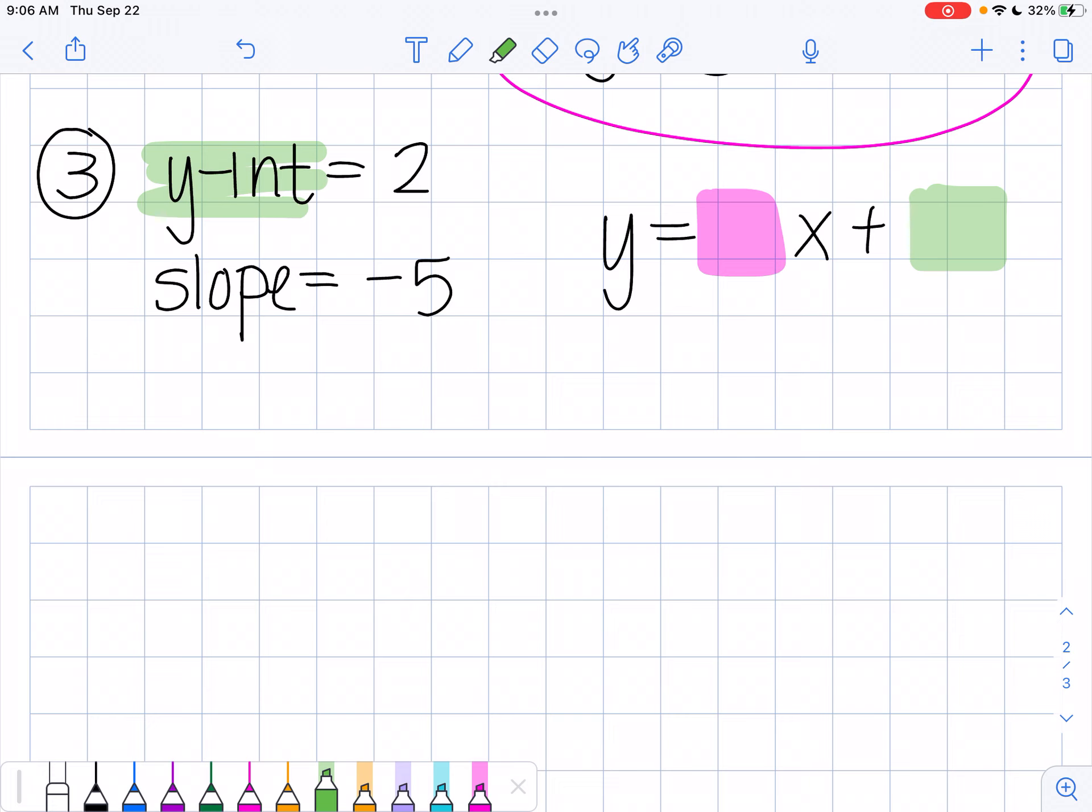So I'm going to take my y-intercept and plug it here, and I'm going to take my slope and plug it here. So this gives me negative 5x plus 2.